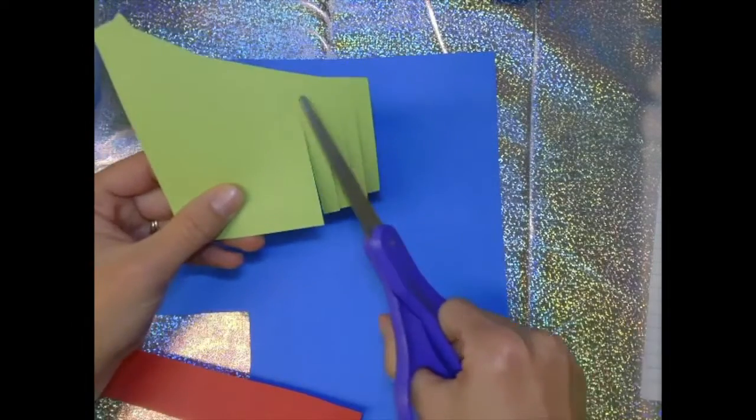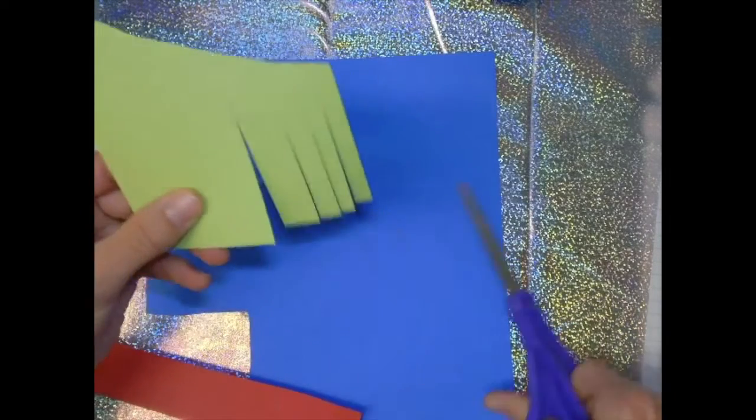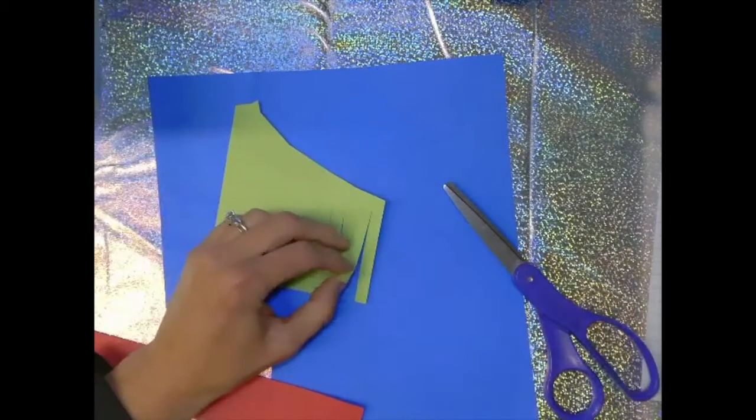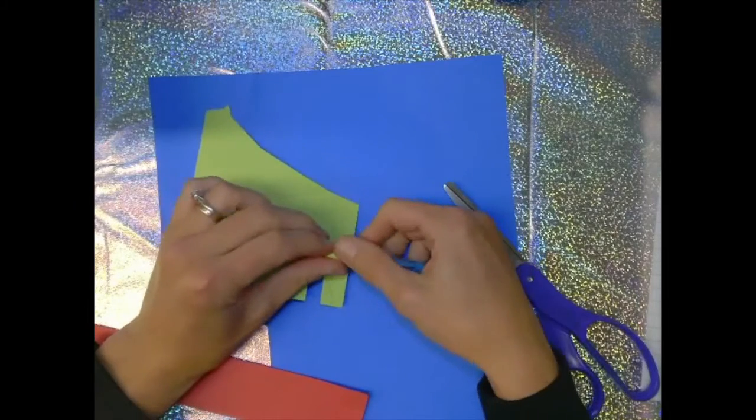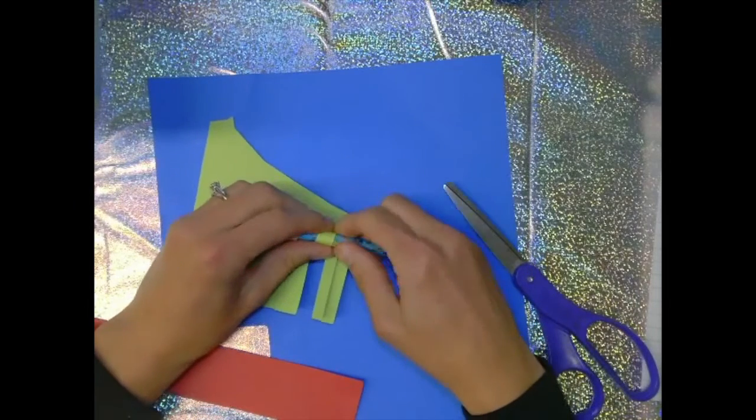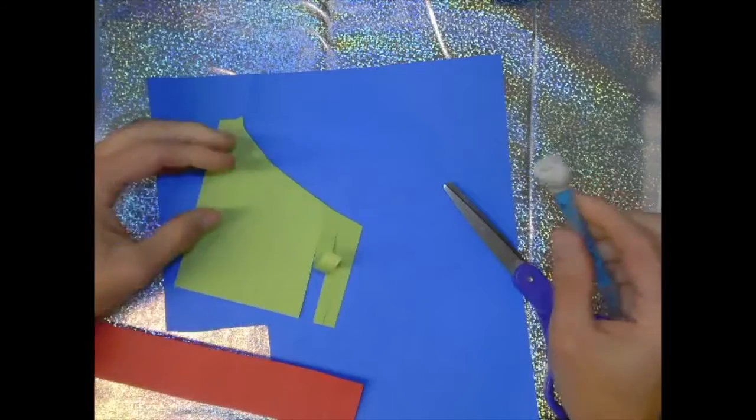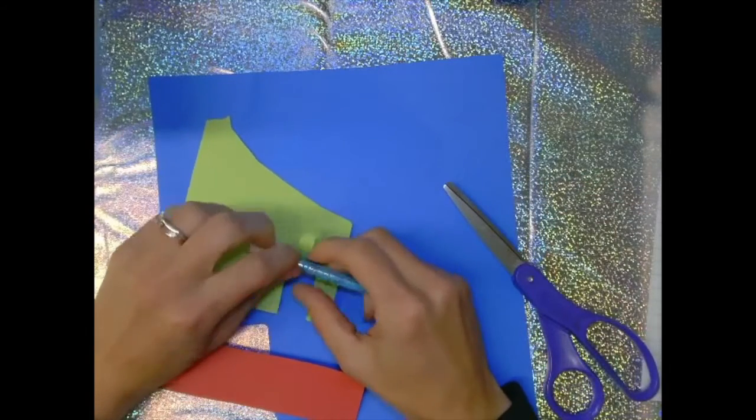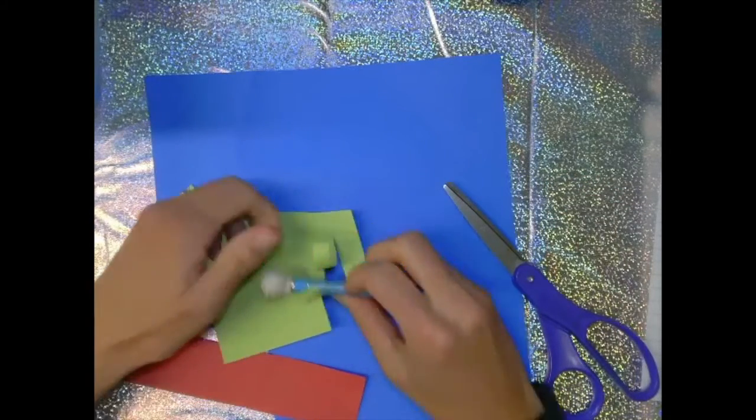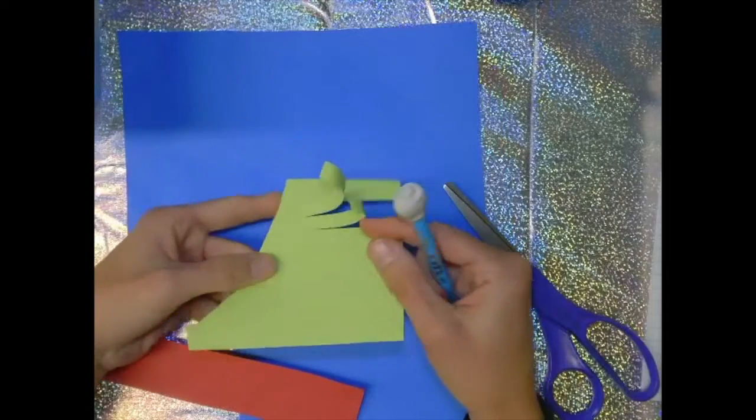And notice I'm not cutting them all the way off my piece. When you get done with that, you can roll them on a pencil or on a pen, marker, something. Anything you have to roll them up and that will make them curled on the ends.